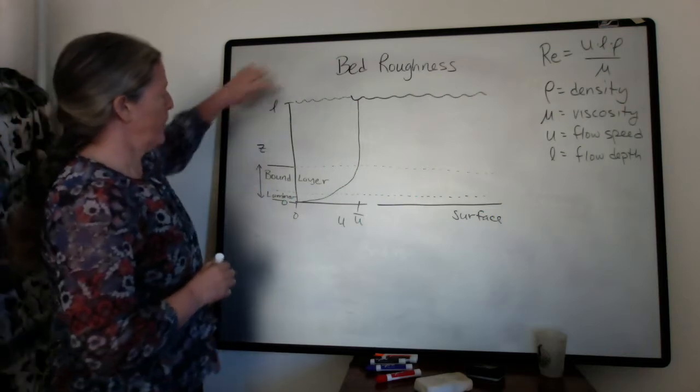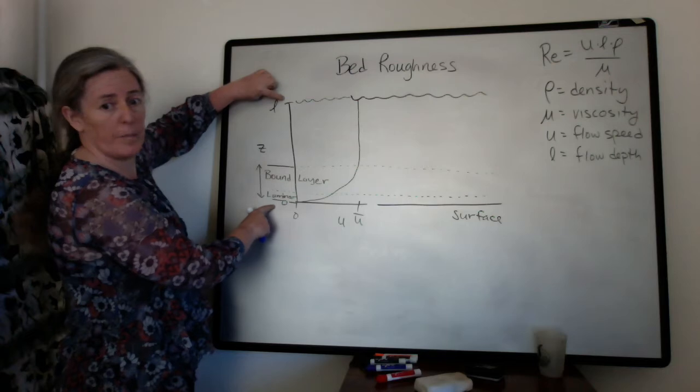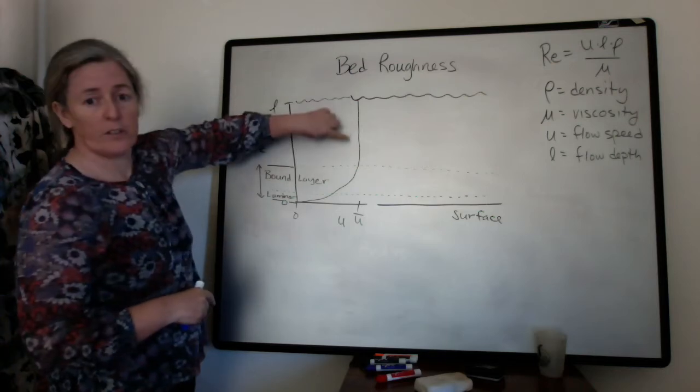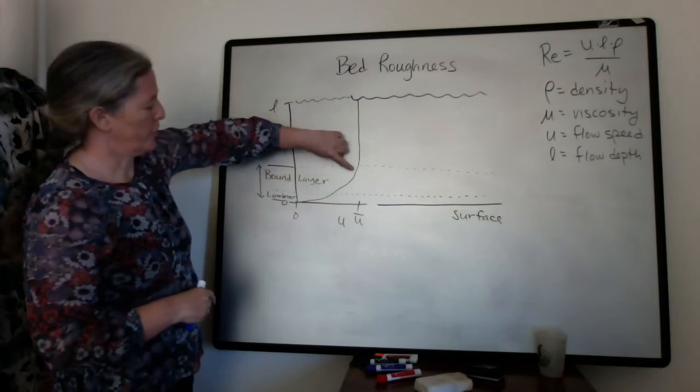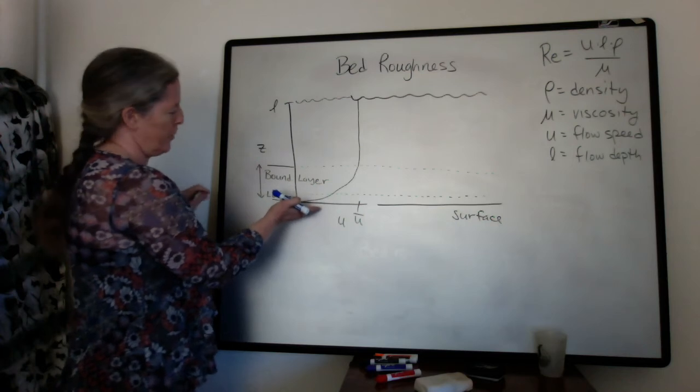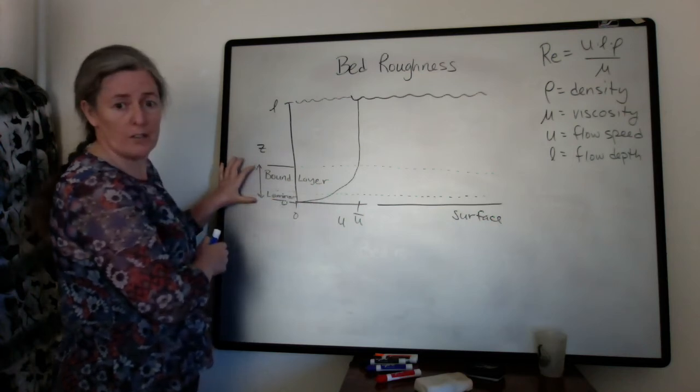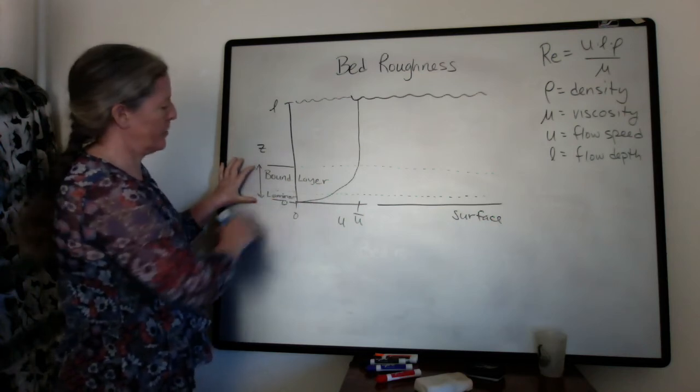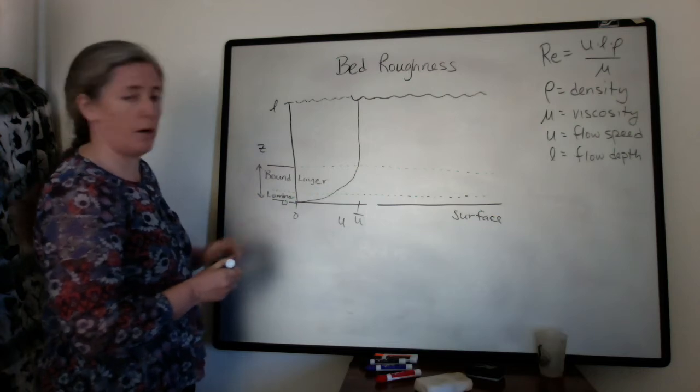So we have our flow with flow depth L and this block line represents our flow speed. When it starts flowing down due to friction at the bottom, that's the top of our boundary layer that goes to the bottom and then we have this laminar sub-layer at the bottom.